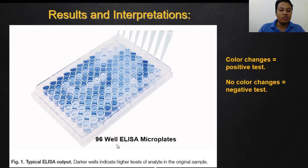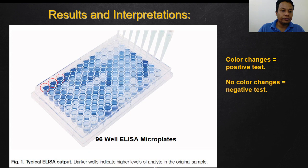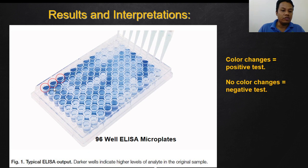This is how results and interpretation work in EIA. We are looking at a 96-well ELISA microplate. ELISA is a subtype of EIA — EIA has many methods, and ELISA is one of them. For positive tests, we observe color changes, and for negative tests there will be no color changes. We can perform almost 90-plus samples on one ELISA plate.